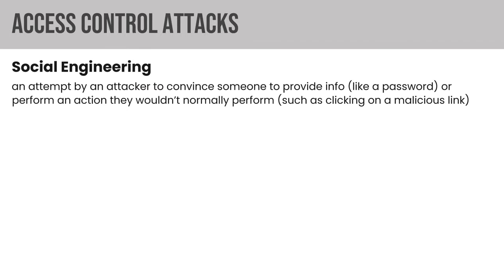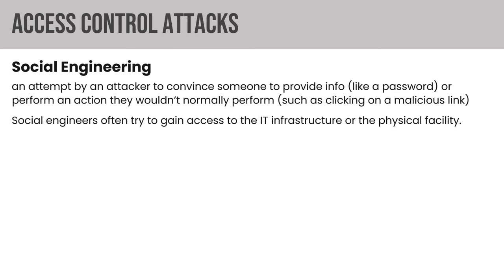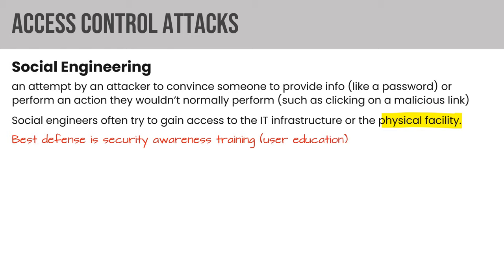Social engineering is any attempt by an attacker to convince someone to provide information they wouldn't normally — like a password — or perform an action they wouldn't normally, like clicking a malicious link. Social engineers often try to gain access to IT infrastructure or physical facilities, so understanding how people move around an organization is valuable to them. The best defense is security awareness training.